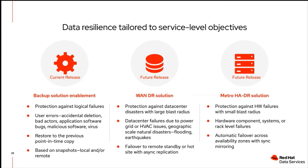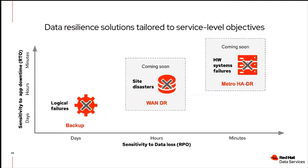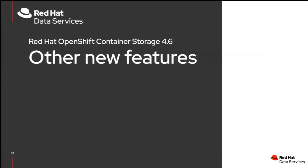Later on there will also be a Metro HA DR solution for protection against hardware failures at the hardware component, system, and rack level. For now we have full support for the backup solution; future releases will bring asynchronous and synchronous replication. This all relates to RTO — Recovery Time Objective, the time it takes to get back to a certain point and reduce application downtime — and RPO — Recovery Point Objective, determining how far back you can recover.